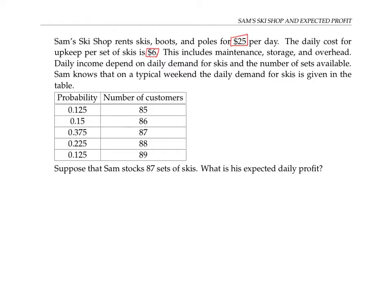So for example, sometimes Sam gets 85 customers—that happens 0.125 of the time, or 12.5% of the time. Sometimes he gets 86 customers—that happens 0.15 of the time, or 15% of the time, and so on.